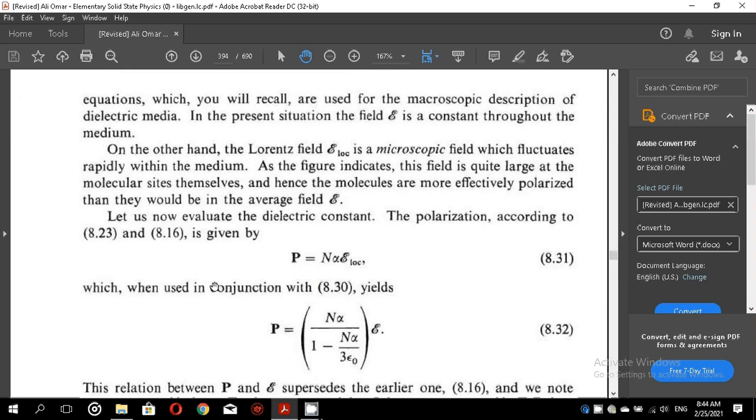On the other hand, the Lorentz field or the local field is a microscopic field which fluctuates rapidly within the media. As the figure indicates, this field is quite large at the molecular sites themselves and hence the molecules are more effectively polarized than they would be in the average field.